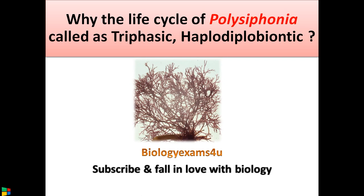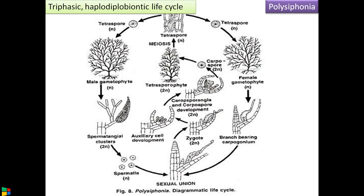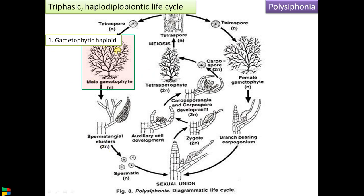Polysiphonia is an algae that belongs to Rhodophyta — it is a red algae. The first question is: why is this life cycle called a triphasic haplodiplobiontic life cycle? Looking at this diagrammatic picture of the life cycle, there are three phases. The first living phase is the gametophytic haploid phase.